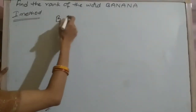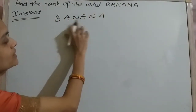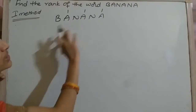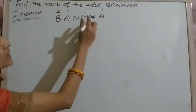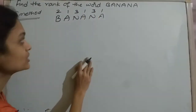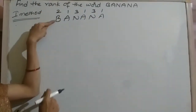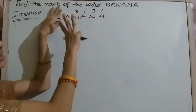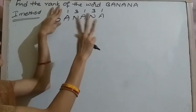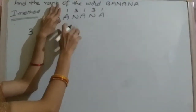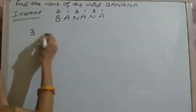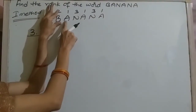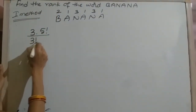In the first method, first you write BANANA, then give the alphabetical order number. B gets one, A has three ones, N has three. So before B there are two letters — A and N — and A is repeated three times. Write three in the numerator. Five digits can occupy in 5! ways, with three A's in 3! ways and two N's in 2! ways in the denominator.